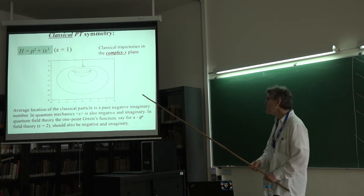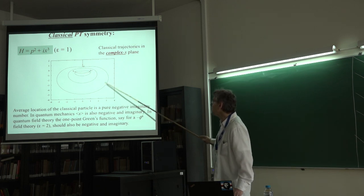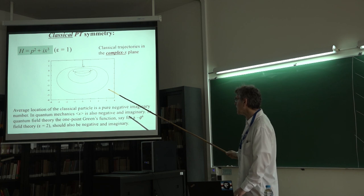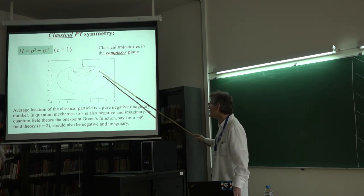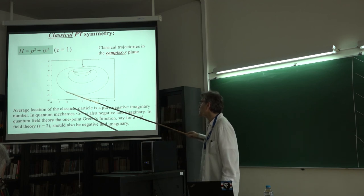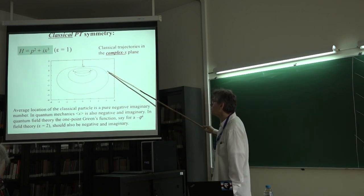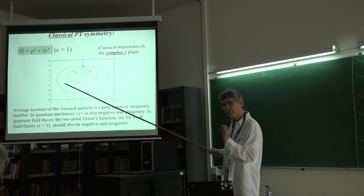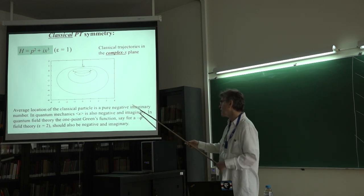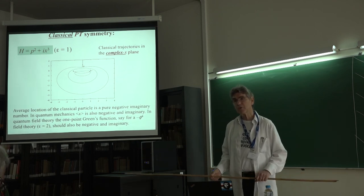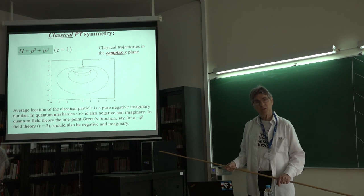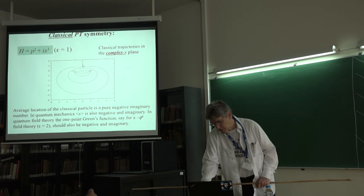It's also interesting to study classical PT symmetry. You see classical orbits in the complex plane — the particles go off into the complex plane but the orbits have left-right symmetry. In quantum mechanics, for a p² + ix³ theory, the expectation value of x is negative and imaginary. And if you calculate in quantum field theory and compute the one-point Green's function, you expect it to be pure imaginary — negative and imaginary — which I'll show later.